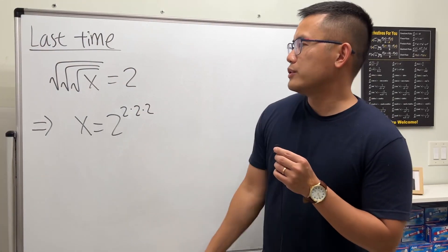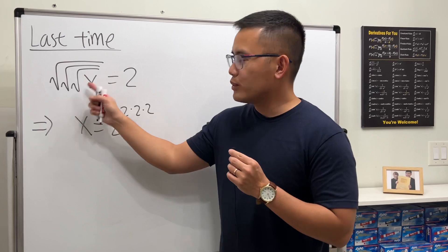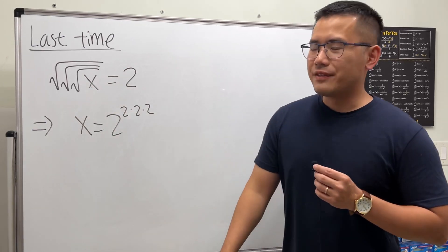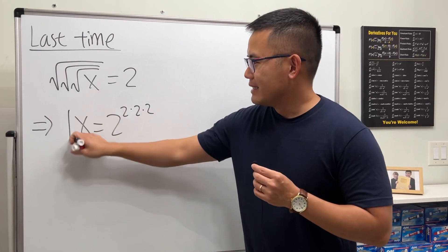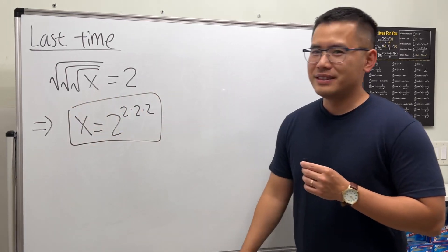So last time I told you guys this equation, the square root of the square root of the square root of x is equal to 2, and the answer for that is x is equal to 2 raised to the 2 times 2 times 2. So if you've seen that video, check that out in the description.